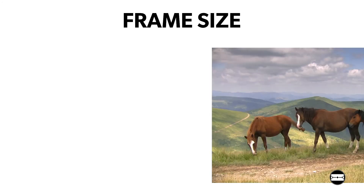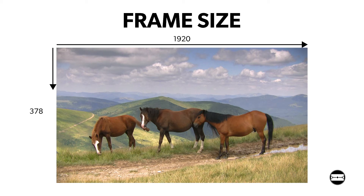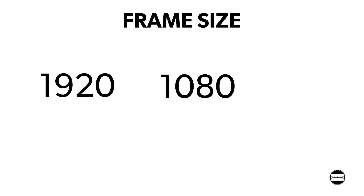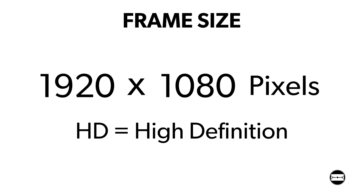Another important property of digital video files is the frame size. The size of a frame is measured by the number of pixels across by the number of pixels down. These numbers are also sometimes known as the video's resolution. A common frame size for digital video is 1920 by 1080, which is known as HD or high-definition video.